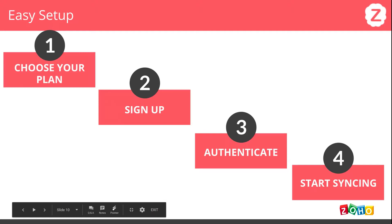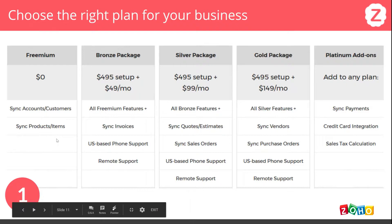I'm going to go through the sign-up process — pretty basic: choose your plan, sign up, authenticate, start syncing. There's a freemium version for accounts and products, which sync to customers and items in QuickBooks. Bronze allows you to sync invoices. Silver allows you to sync quotes, estimates, and sales orders.